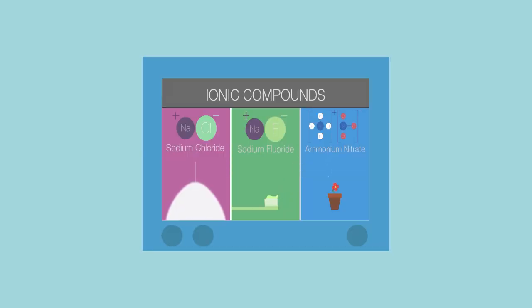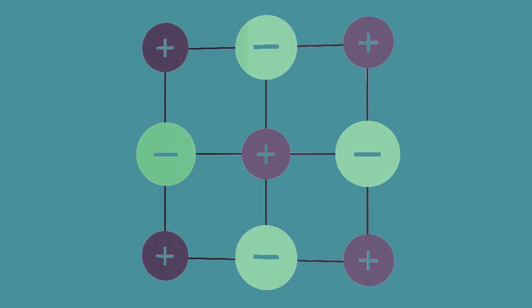Do you remember our video on ionic compounds? Some compounds bond by forming charged ions which are then attracted to each other. They form non-directional bonds, which means they can build up giant structures with lots of bonds between ions.